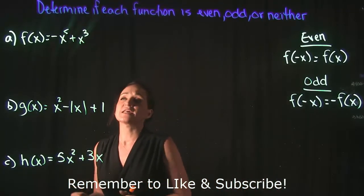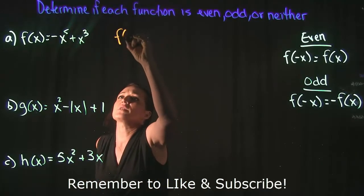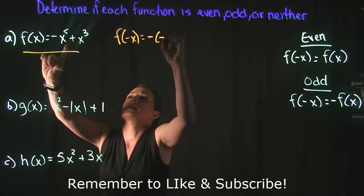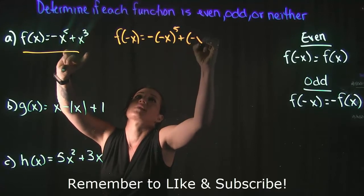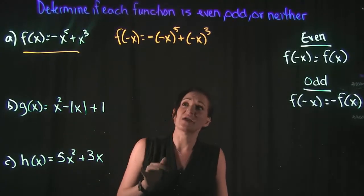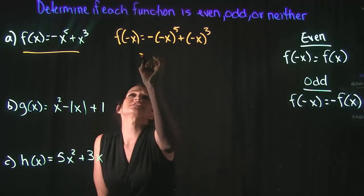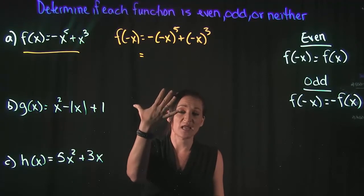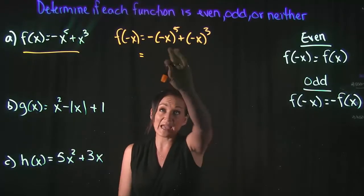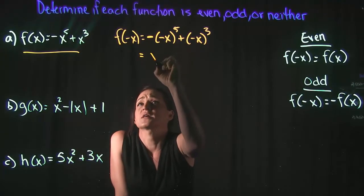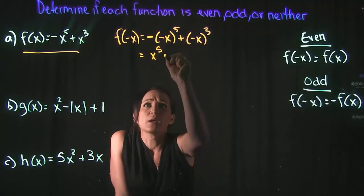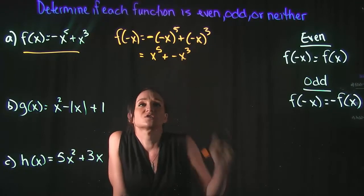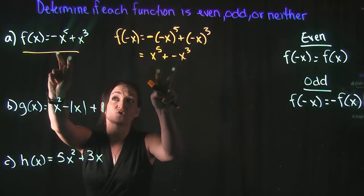For example A, let's test to see if it's even first. It's even if I plug in negative x and get f of x back. So f of negative x gives us negative x to the fifth plus negative x to the third. When we simplify, negative x to the fifth — that's negative x multiplied five times — gives us a negative, but the negative out front turns it positive, so we get x to the fifth plus negative x cubed. Are these the same thing?